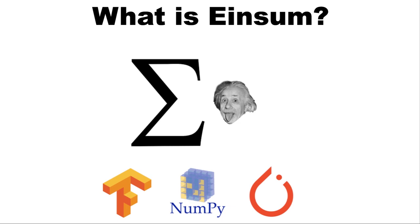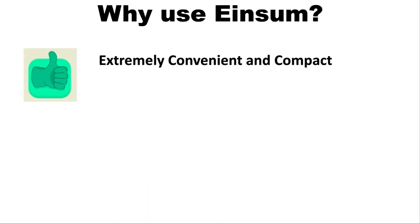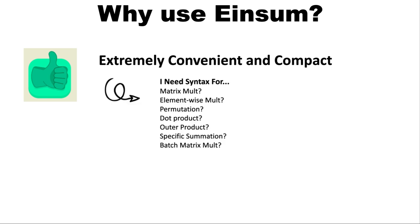But before we try to understand how it works, let's first ask the question: why? Einsum is extremely convenient and very compact, and it's an operation that can be used as a replacement for so many tensor operations. Just a small list would be matrix multiplication, element-wise multiplication, permutation, and more. What is even more amazing is that it can combine multiple of them in a single einsum call. So we can say goodbye to remembering this syntax for matrix multiplication for NumPy, PyTorch, and TensorFlow.